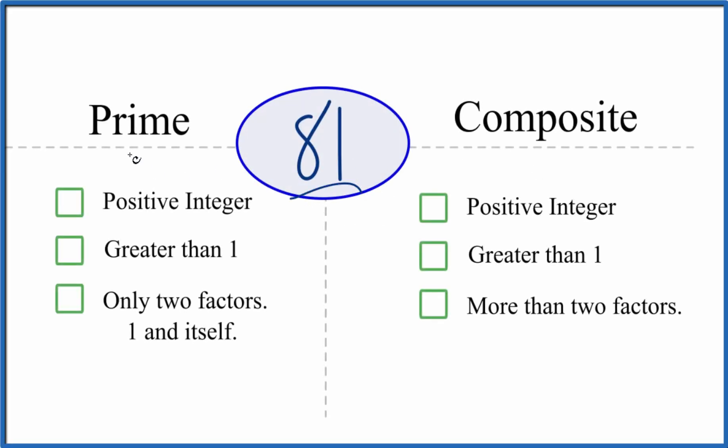Let's figure out whether 81 is a prime or a composite number. So here's how we can do that. Let's start with seeing whether 81 is prime.